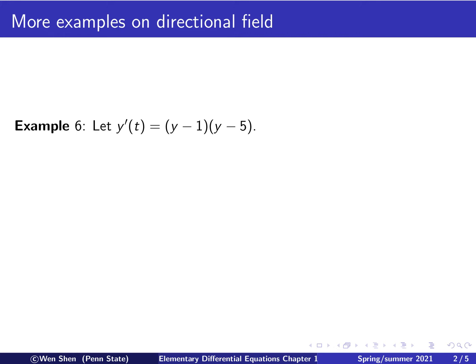Okay, so in this example, the equation is the following. We have y prime equals y minus 1 times y minus 5. So I would like to call your attention again on the right-hand side. The function depends only on y, but not on t.